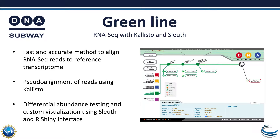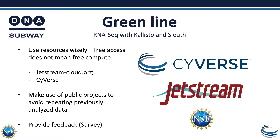Pseudo-alignment of reads is done using the Kallisto software. Differential abundance testing and custom visualization is conducted using Sleuth and presented in our Shiny app.